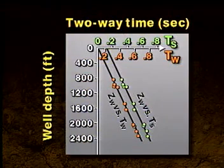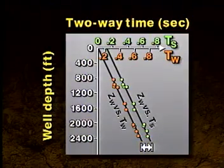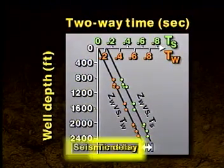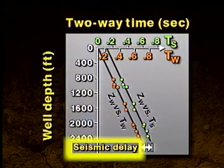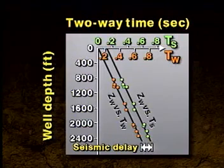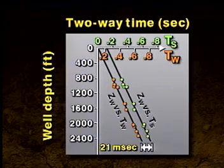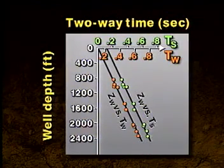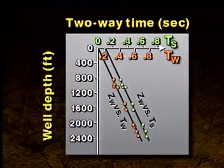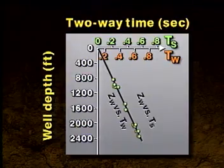By comparing the two time-depth curves, we can see that the two curves differ by a constant shift in time. This differential is called the time lag or seismic delay and is caused by electronic delays within the recording system. In this example, the seismic delay is equal to 21 milliseconds. So if we subtract 21 milliseconds from each seismic time, the two curves will be equal, and the seismic times will more closely convert to the well depths.